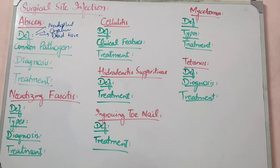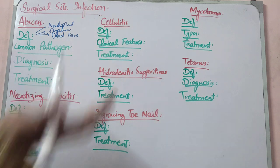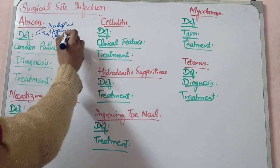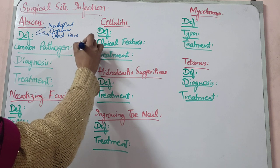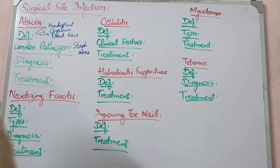The most common pathogen when asked is Staph aureus. In addition, anaerobes, E. coli, Proteus, Klebsiella, Pseudomonas can be involved — but the most common when asked is Staph aureus. It is a clinical diagnosis — there is no need for investigation; you can tell by the patient's features and visible appearance.